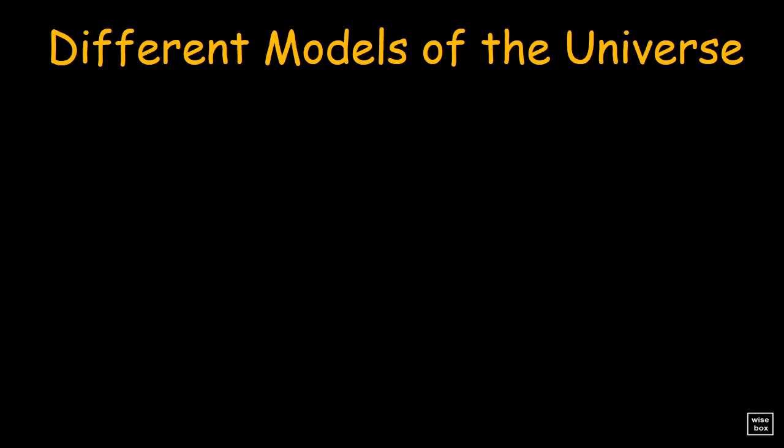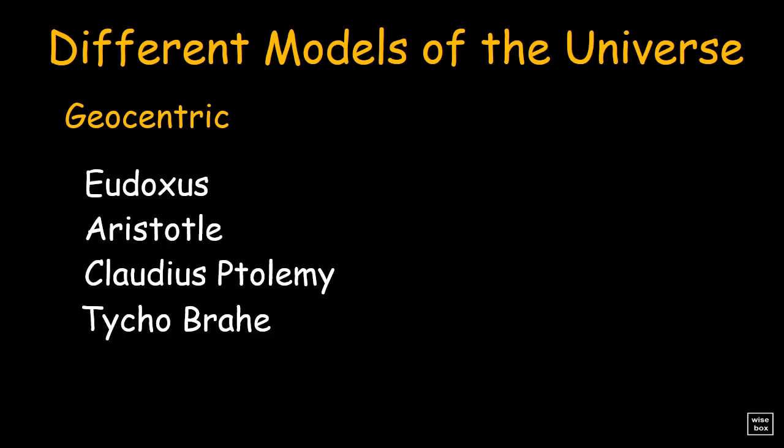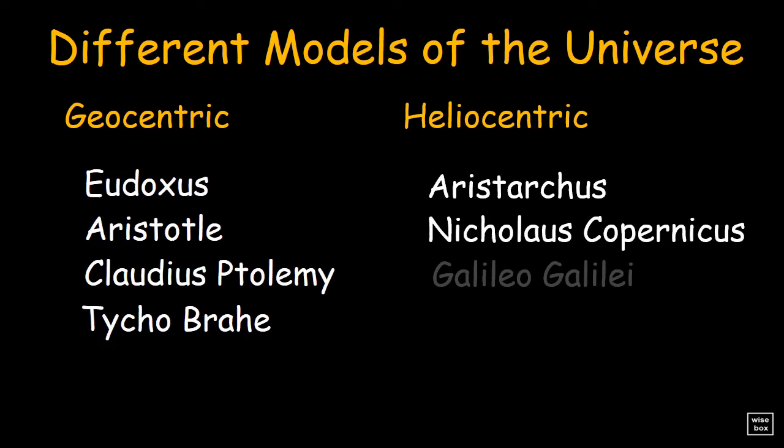Here are the philosophers who proposed the geocentric model of the universe: Eudoxus, Aristotle, Claudius Ptolemy, and Tycho Brahe. While those who believed in the heliocentric model are Aristarchus, Nicolaus Copernicus, Galileo Galilei, and Johannes Kepler.